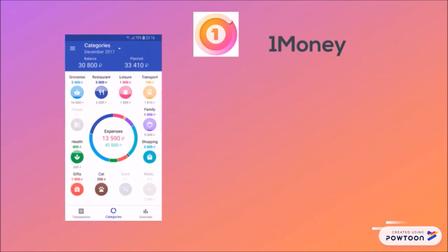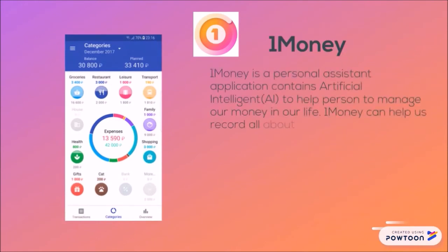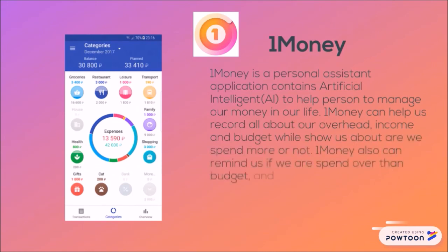1Money is a personal assistant application incorporating Artificial Intelligence to help a person manage their money in life. 1Money can help us track all about our spending, income and budget, and will show us whether we are overspending or not. 1Money can also remind us if we are spending over budget and will tell us where to control our overhead.